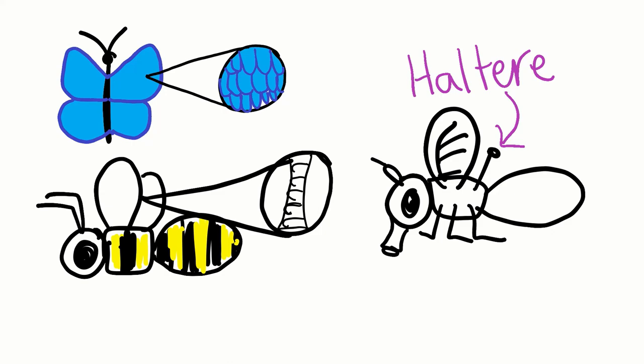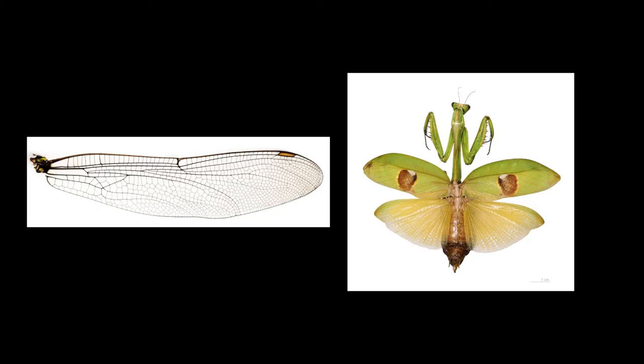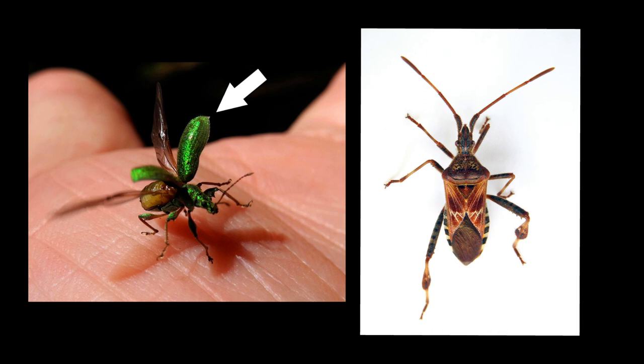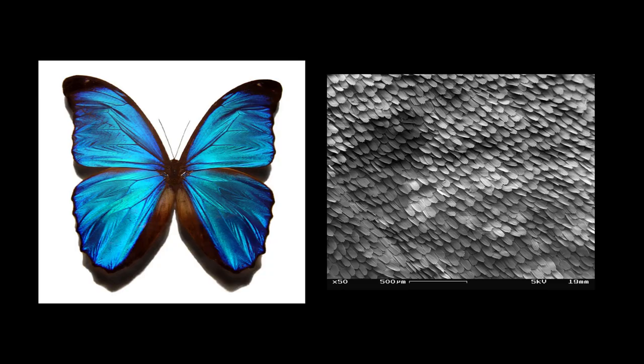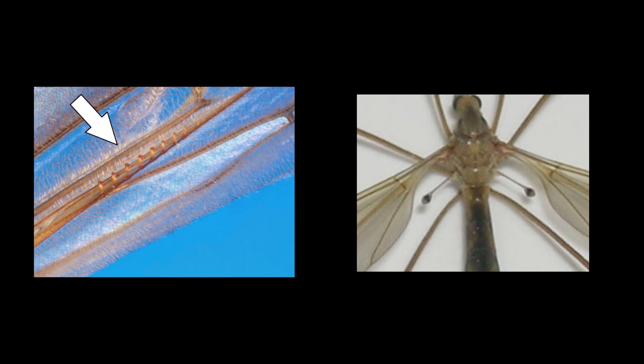Let's check out some pictures. On the left you can see a membranous wing; on the right you can see a tegmena. On the left you can see elytra, and on the right are hemielytra. On the left is a blue morpho butterfly, and on the right is a close-up image of butterfly scales. On the left is a close-up picture of the hamuli of a wasp, and on the right is the haltere of a crane fly.